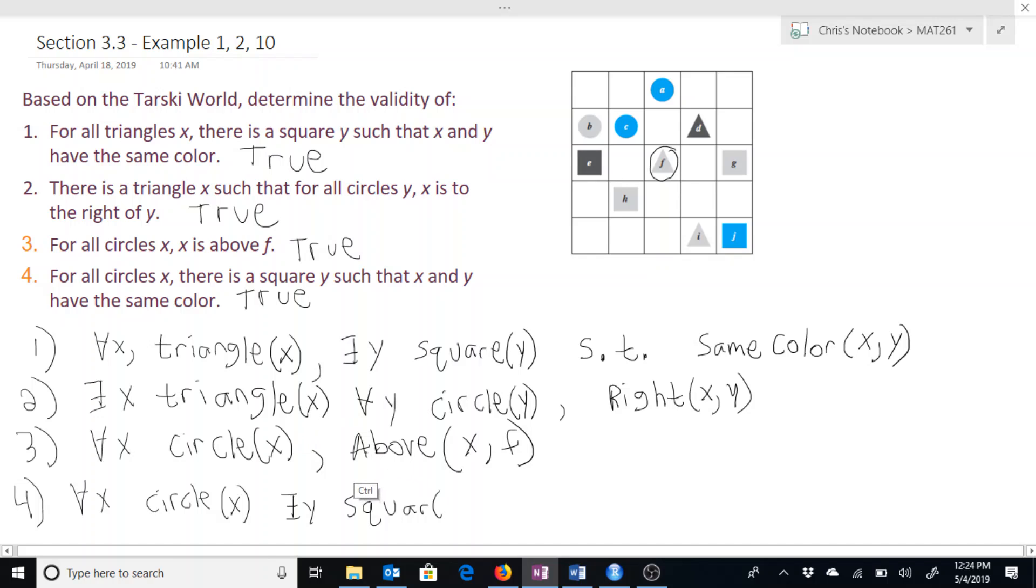There exists a y that's a square such that x and y have the same color. So x and y have the same color.